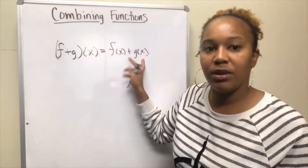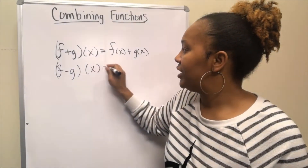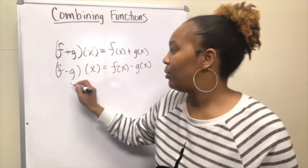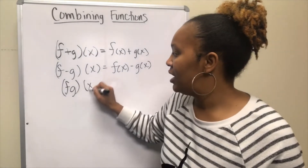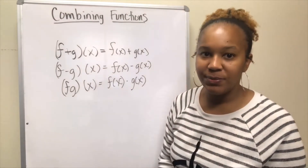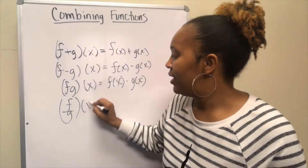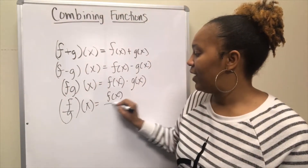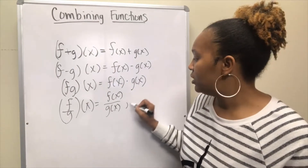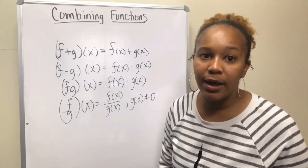If you see it look like (f-g)(x), that's the same as saying f(x) minus g(x). Same thing with multiplication: if it looks like (f·g)(x), that's the same as saying take the f function and multiply it by the g function. And lastly, (f/g)(x) means f(x) divided by g(x), but remember your denominator cannot be zero, so this will only work if g(x) is not zero.